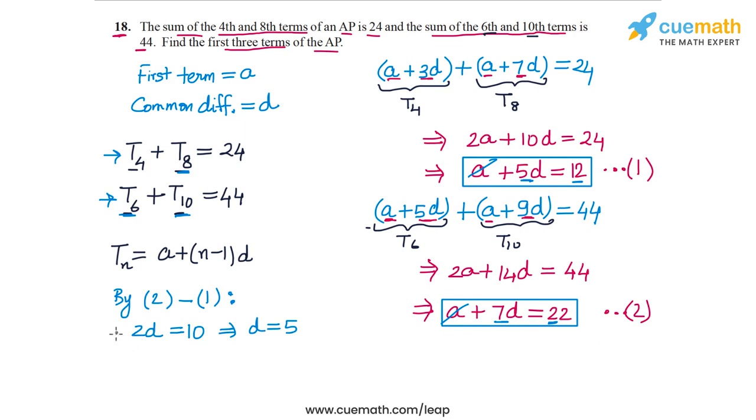Now if I plug this value of D into the first equation, I get A plus 25 equals 12, and this means that A equals 12 minus 25 or minus 13. So the first term is minus 13 and the common difference is 5.